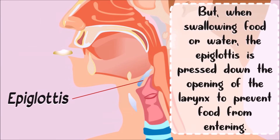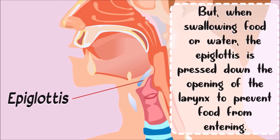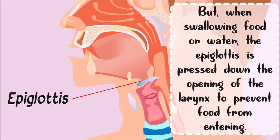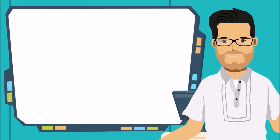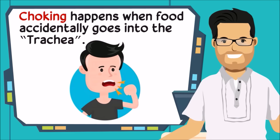When swallowing food or water, the epiglottis is pressed down over the opening of the larynx to prevent food from entering. Choking happens when food accidentally goes into the trachea.